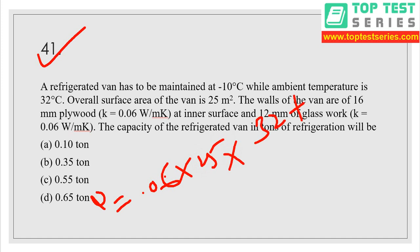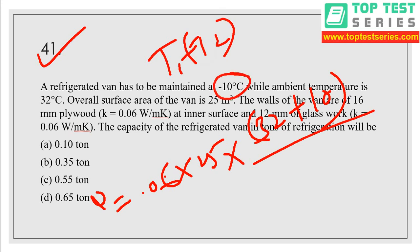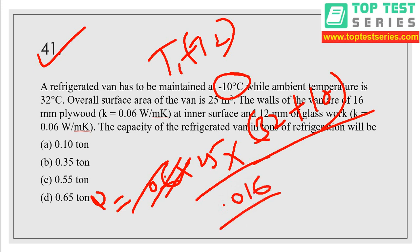Temperature difference is 32 plus 10 because T1 minus T2, where T2 is minus 10, so minus minus will be plus. There are two parts — we have two thermal conductivities. The equation becomes: dx is 16 mm = 0.016 divided by K = 0.06, plus 12 mm = 0.012 divided by K = 0.06.